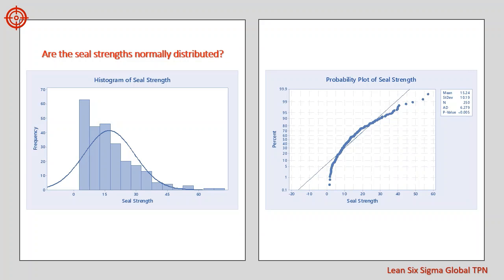Seal strength is the force required to open the bag. To study the process, the operator randomly samples 250 bags from a batch and measures their seal strength. Look at this histogram of data. Do these data appear normally distributed? This histogram is skewed to the right and the p-value for the Anderson-Darling test is less than 0.05. Both the histogram and p-value indicate that the data are not well modeled by the normal distribution.